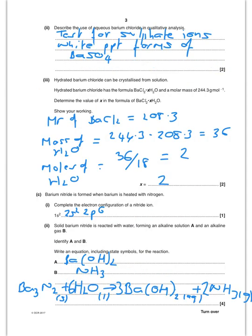So describe the use of aqueous barium chloride in qualitative analysis. I hope you remember we use barium chloride to test for sulfate ions. And if sulfate ions are present, we will see a white precipitate of barium sulfate.